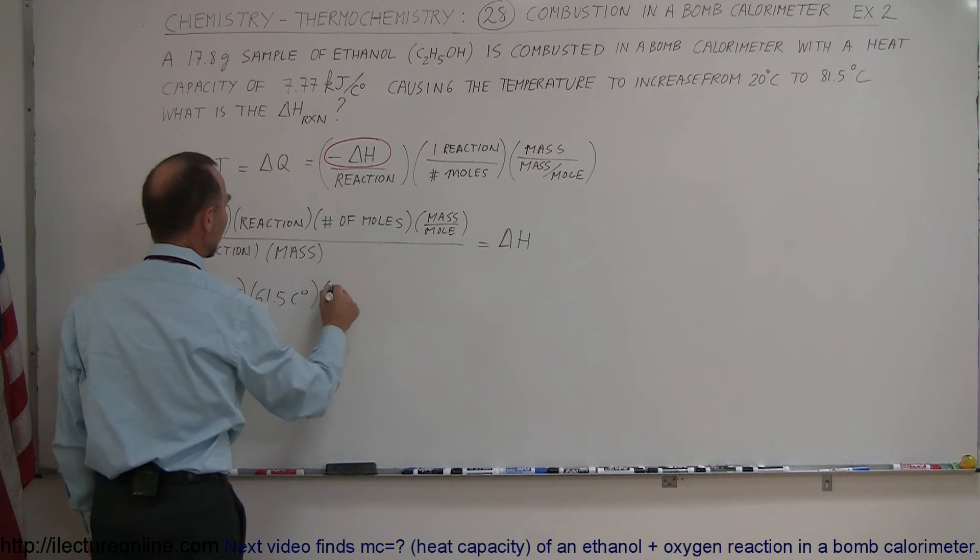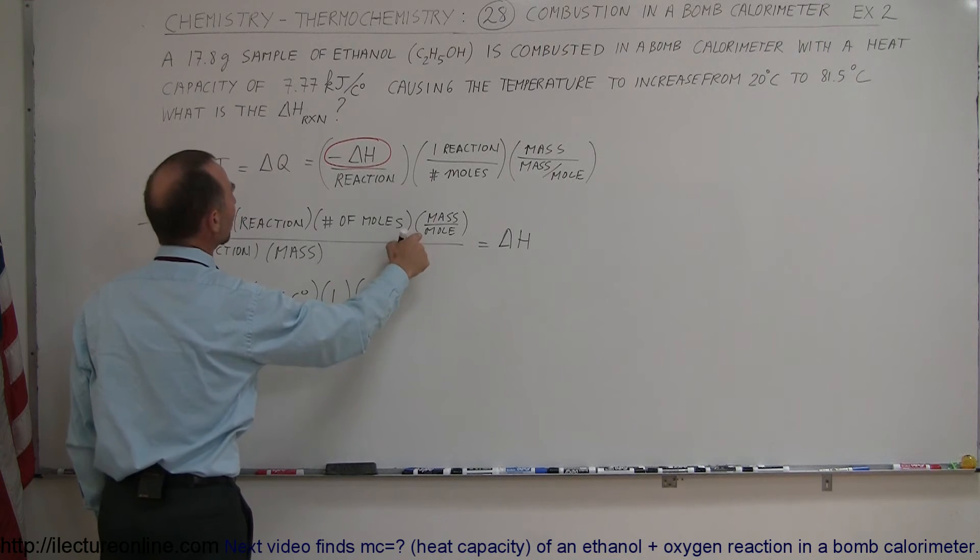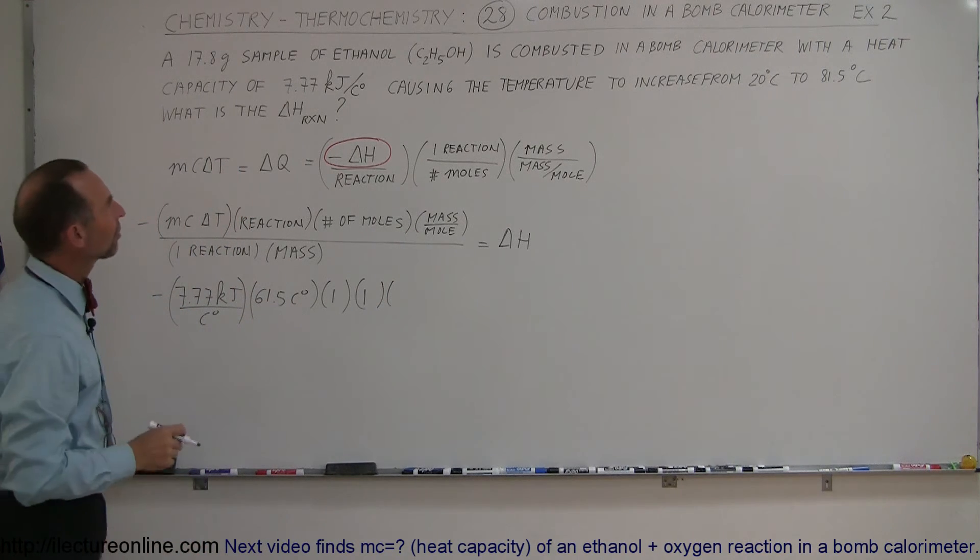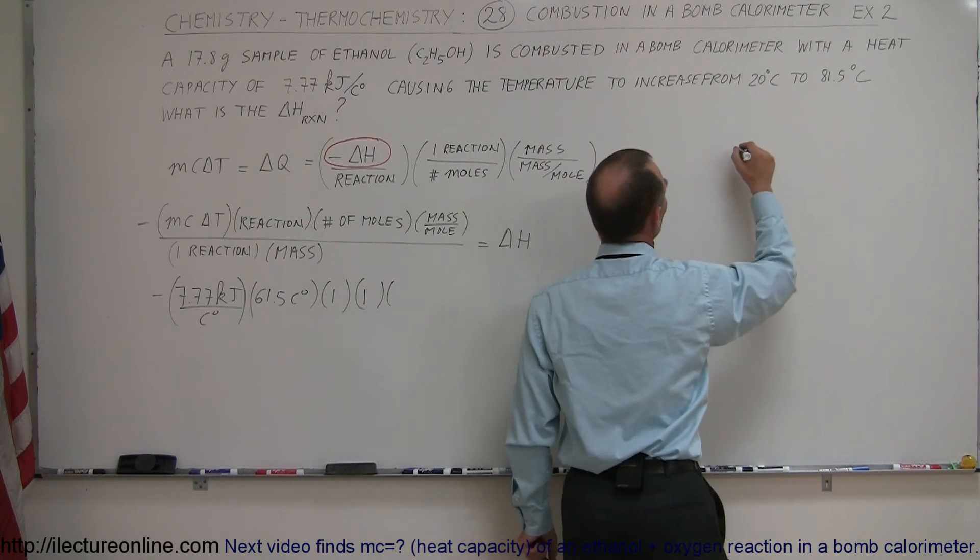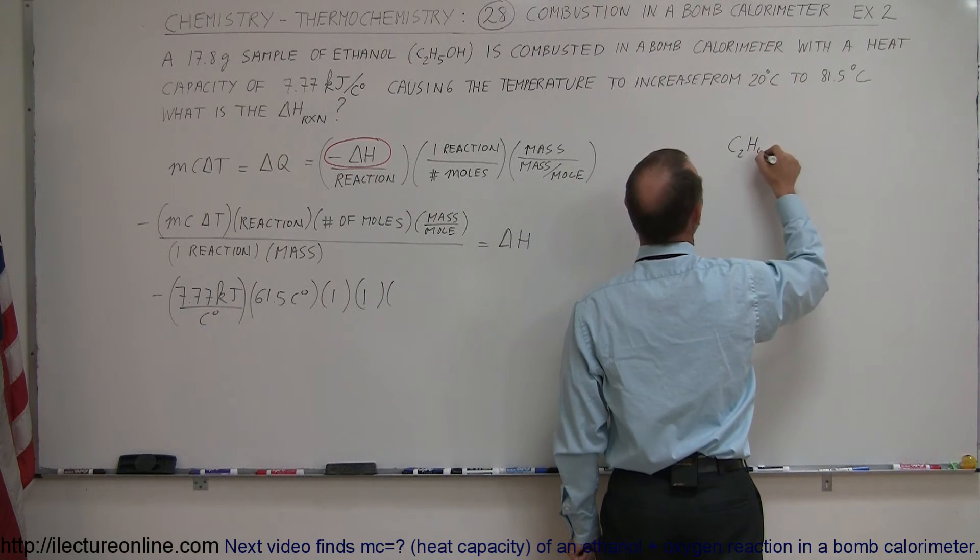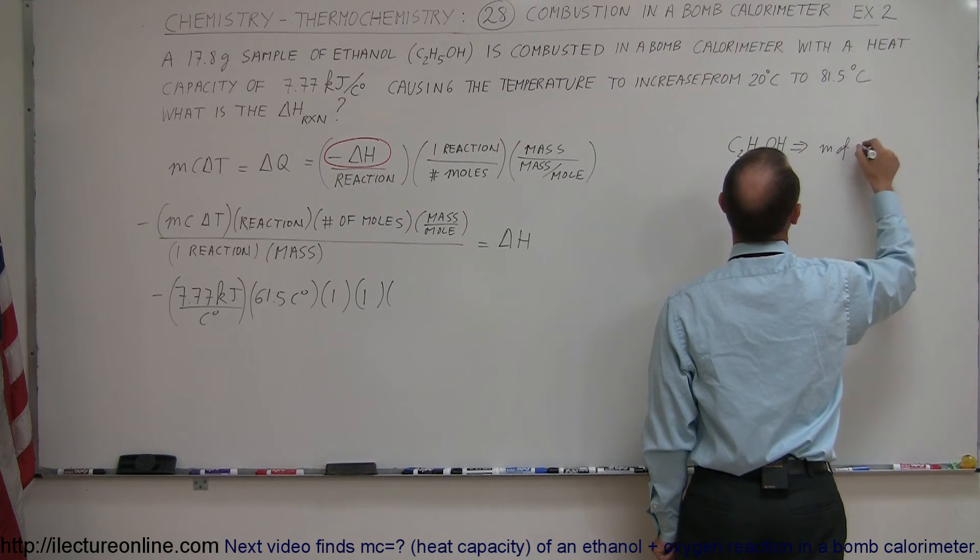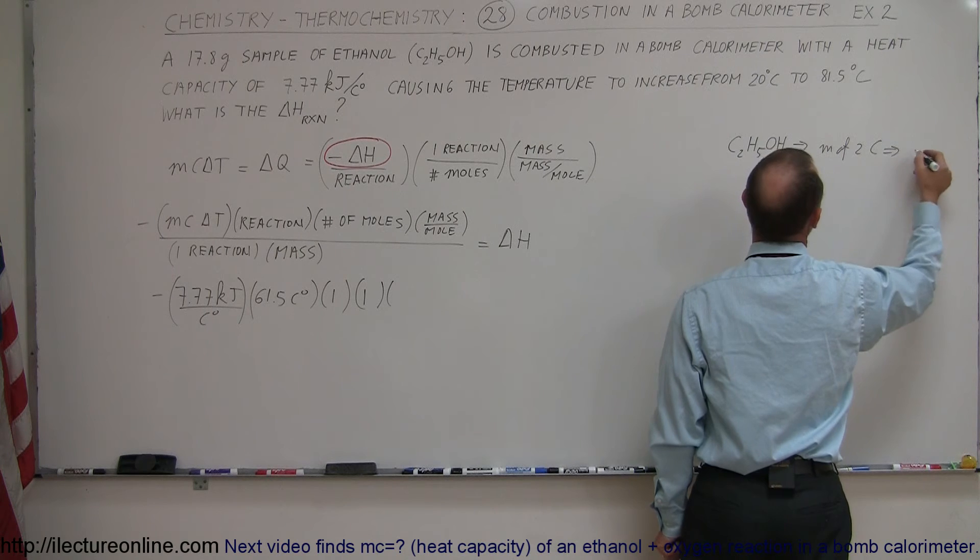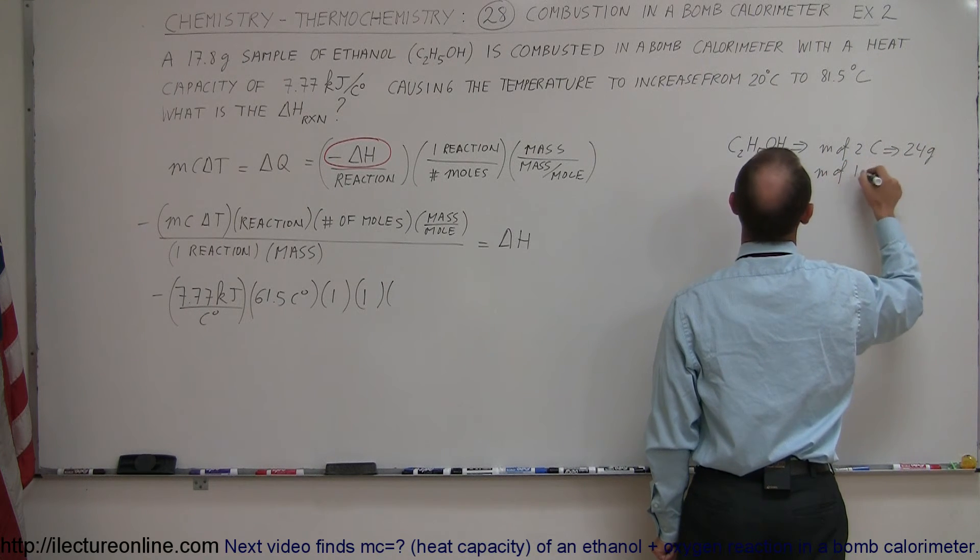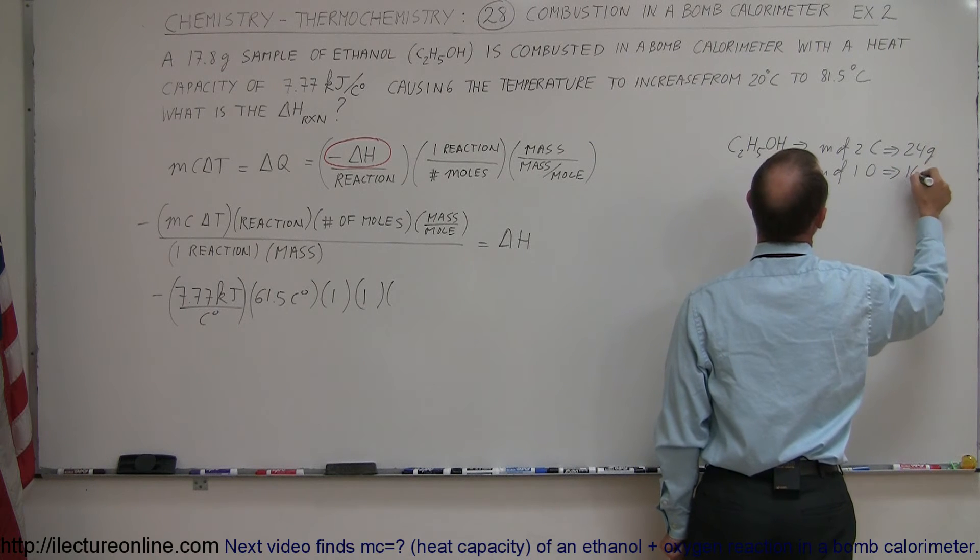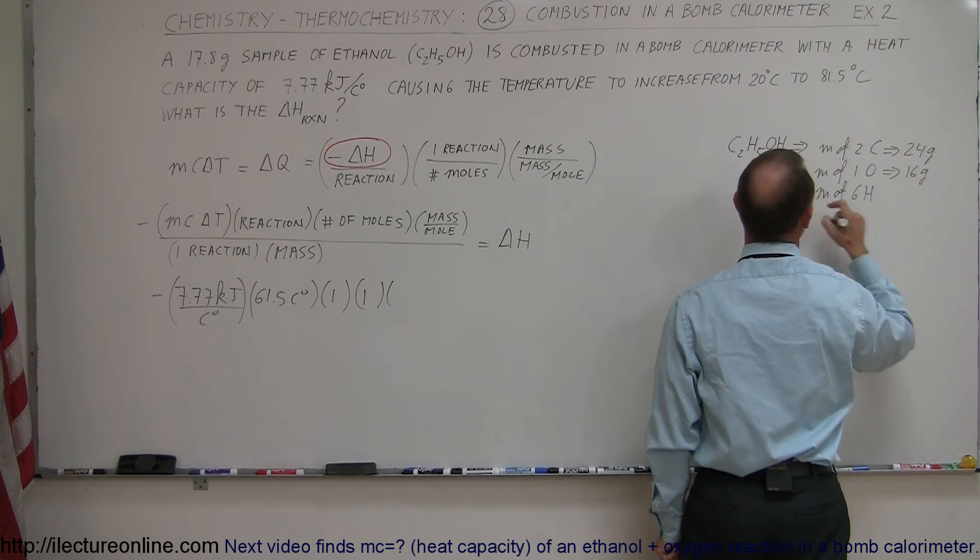Multiply times one reaction, multiply times the number of moles, which is 1, multiply times the mass per mole. What's the molar mass of ethanol? We have C2H5OH. We have the mass of two carbons, that's 2 times 12, or 24 grams. The mass of one oxygen, which is 16 grams, and the mass of six hydrogens, 5 plus 1 is 6, that gives us 6 grams.